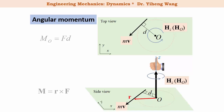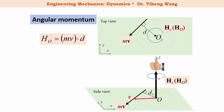The angular momentum h calculated using the scalar form equals the magnitude of linear momentum, m times v, times the moment arm d. d is the perpendicular distance from the reference point O to the line of action of the linear momentum, which is the velocity vector.